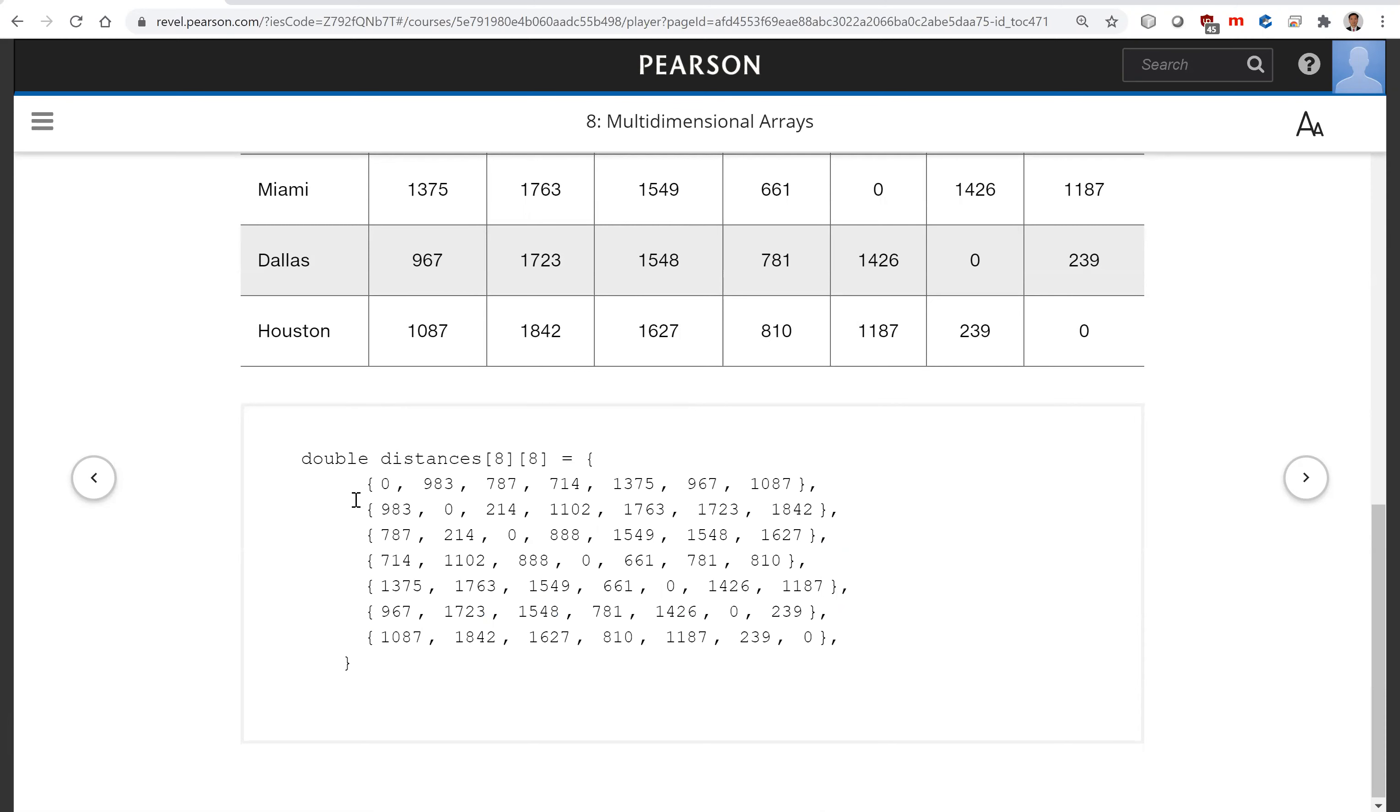Now the two-dimensional array consists of all these rows. This is the first row that represents the distance from Chicago to all the other cities, and the last row is from Houston to all other cities.